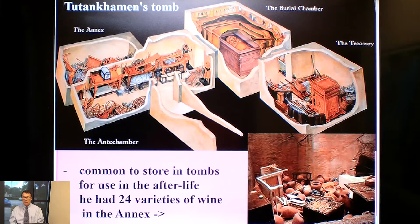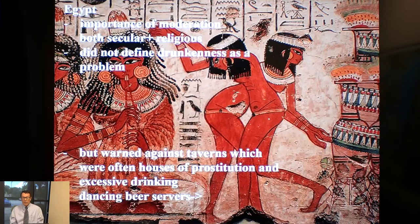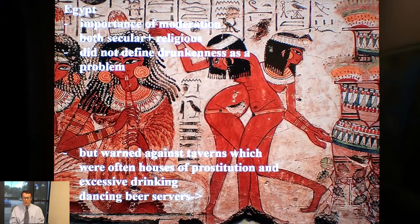Alcohol being so well established early on also became a problem, and we start to see Egyptian documents referring to moderation and abstinence, and eventually they stopped defining drunkenness as a problem. Parties would involve dancing, playing music, and then binge drinking. Artwork shows two ladies combining talents — dancing for the hosts while also serving beer to guests.